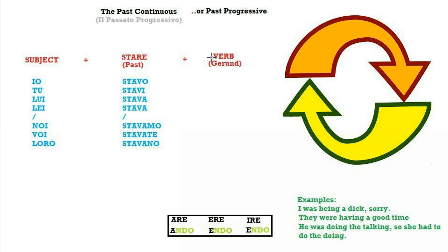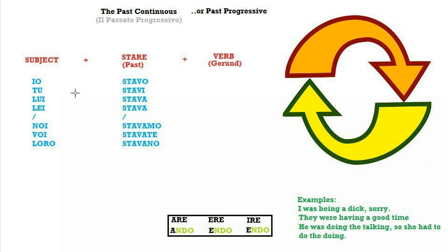If you don't know how to make the gerund in Italian, then I recommend you go back and watch the present continuous, because that's where I explain it. If you don't know what the personal pronouns are, then I recommend you go and watch that video as well. In a nutshell, these are the subject personal pronouns you need for today: I, you, he, she, we, you all, and they.